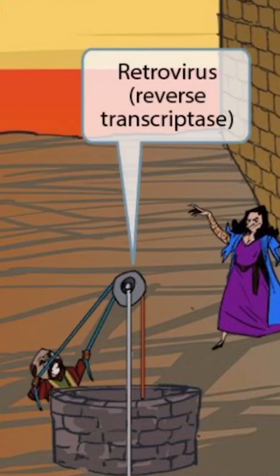We've shown a dwarf who is in bondage to the witch, manning a pulley at a well to provide water for the witch and her forces. Pulleys work by someone exerting a force in one direction, which causes the pail of water to move in the opposite direction — it moves in a retrograde fashion relative to the force. We'll use a pulley to represent retroviruses, and HIV is a member of the retrovirus family.